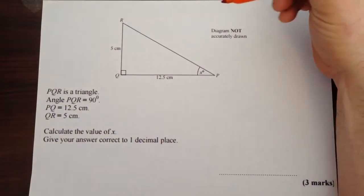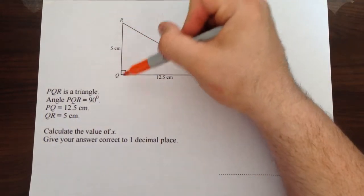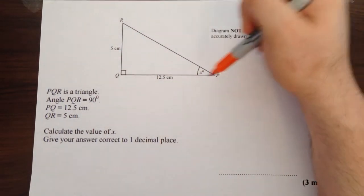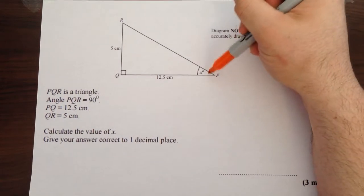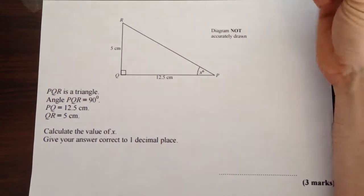Here we have an example of another type of triangle question. If we look at the details we're given in the question, R to Q is 5 cm, Q to P is 12.5 cm. We have an angle marked here as X degrees. We've got a right angle.